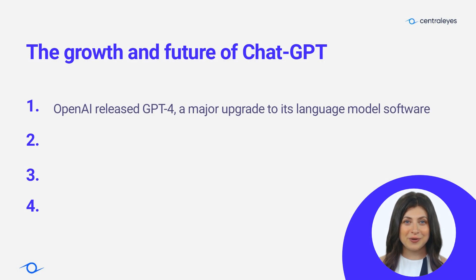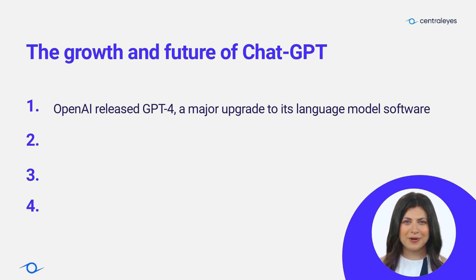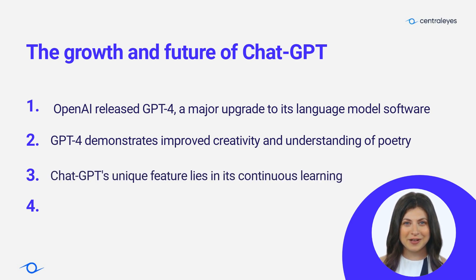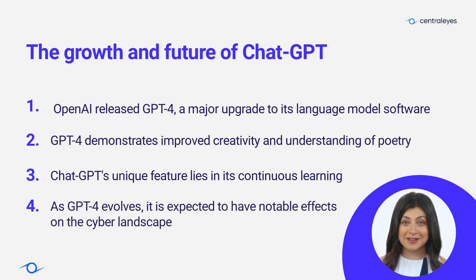OpenAI has recently launched GPT-4, a major upgrade to its language model software. GPT-4 demonstrates even more human-level performance on various benchmarks, with new features like the ability to process longer inputs, fewer mistakes, and improved creativity and understanding of poetry compared to GPT-3. ChatGPT remains a unique and continuously learning system, evolving to become an ultimate knowledge resource with potentially significant impacts on the cyber landscape.